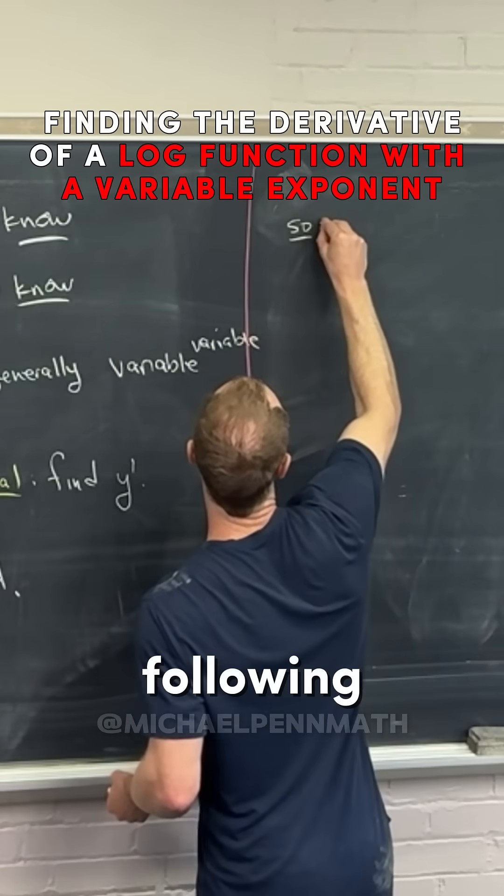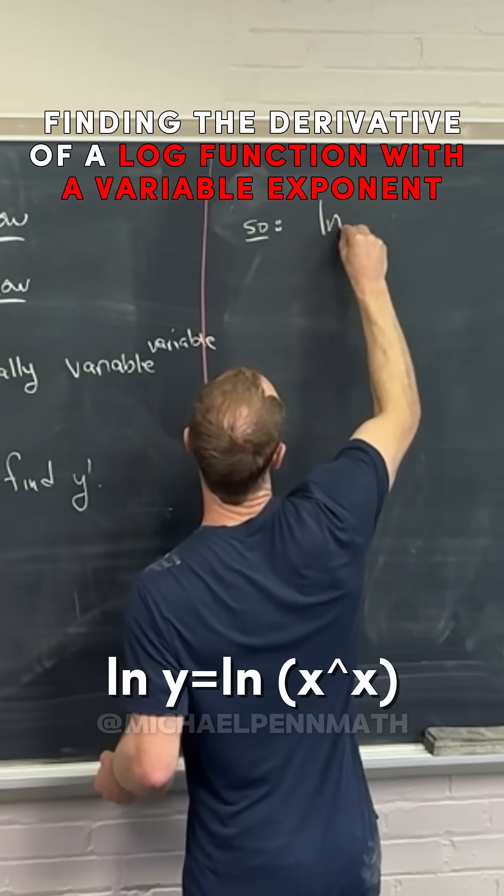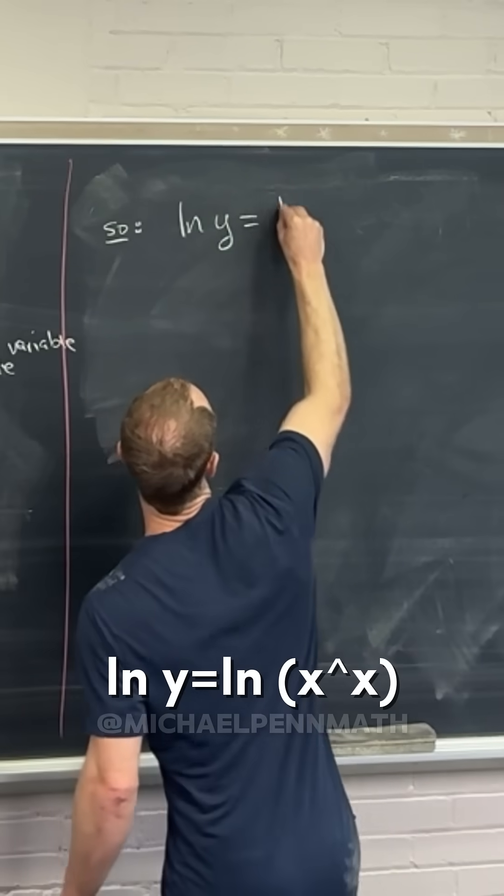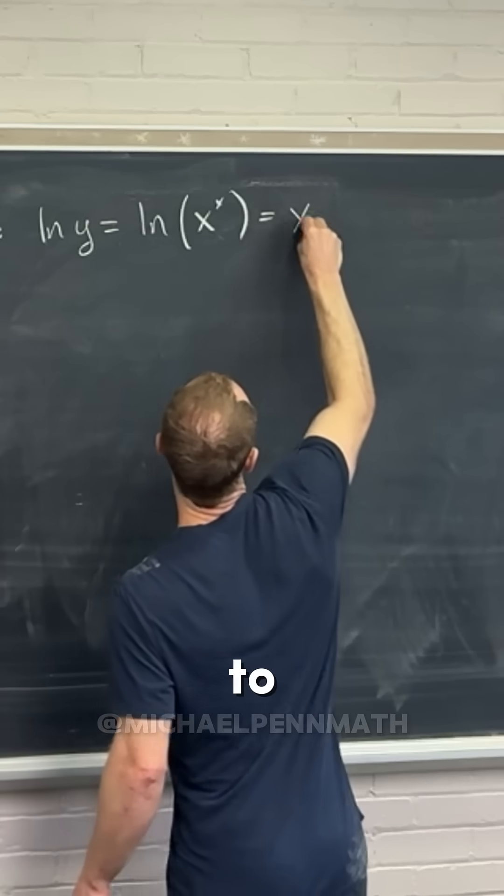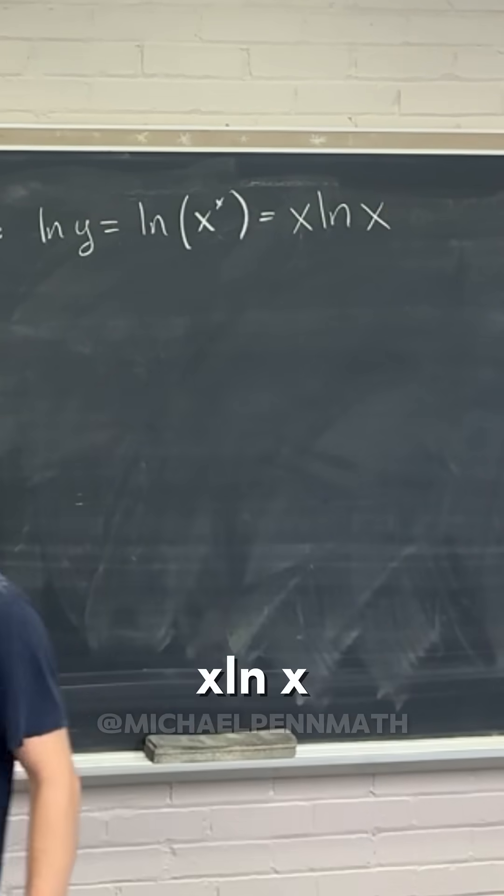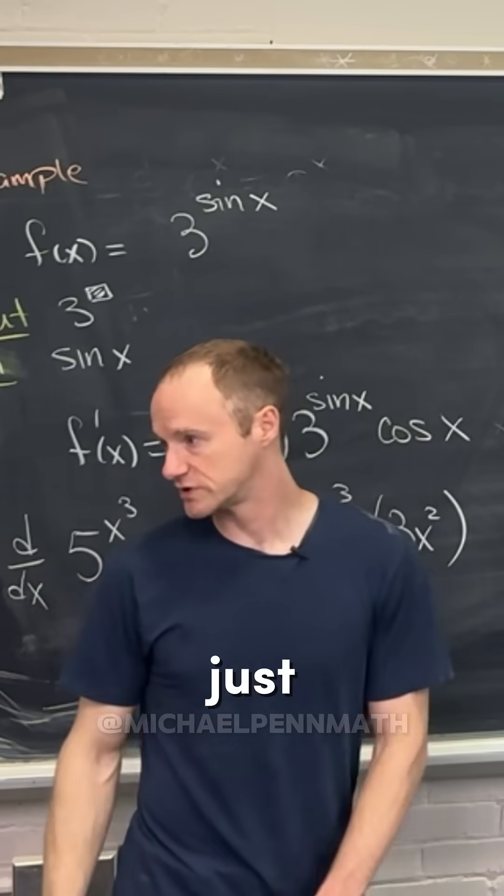So that means we have the following. We have ln y equals ln(x^x), which is equal to x times ln x by our logarithm rule that we just talked about.